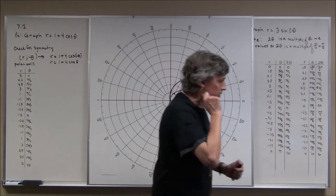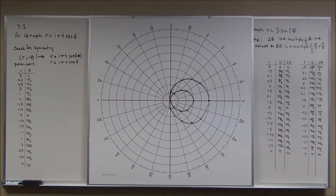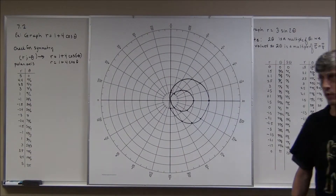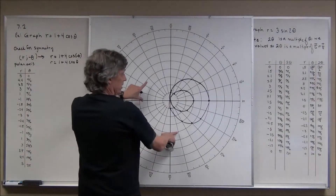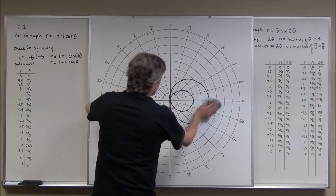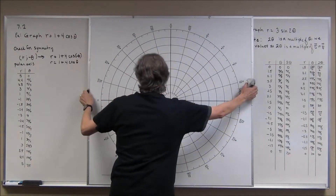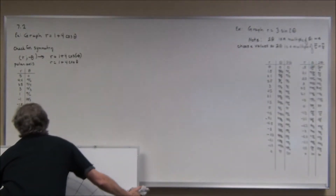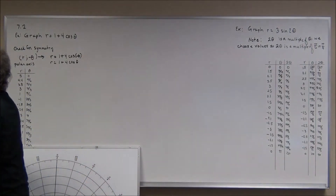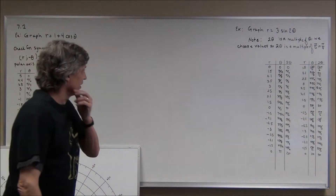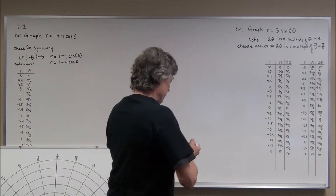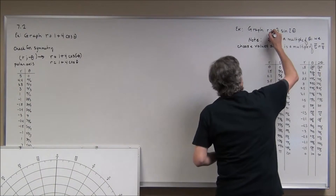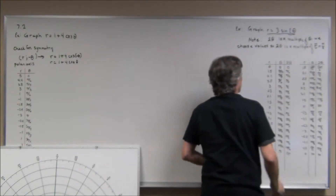I need to clear the board to graph another one. Now this next example has a lot more points, and you might think I doubled the number — I did. The reason is that the argument of the trig function is a multiple of theta.